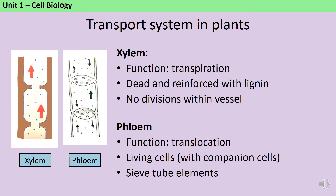Substances are transported around plants by the xylem and phloem. The xylem are responsible for transporting water and also soluble minerals in a process called transpiration. The xylem are dead vessels, reinforced with a woody substance called lignin, and there are no divisions within the vessel, so it's very easy for water and the minerals dissolved in it to travel from the roots up to the leaves and out in what's called the transpiration stream. In contrast, translocation — in which sugars are passed around the plant — goes in all directions at once. This is an active process requiring living cells, so again they need lots of mitochondria. These living cells are supported by companion cells, which sit alongside and provide additional energy and resources for the phloem cells. At the end of each cell there's something called a sieve tube element — a porous plate that it's possible for substances such as sugar to pass through.